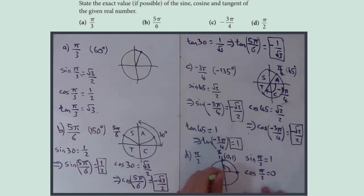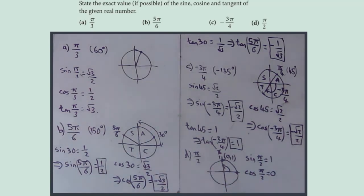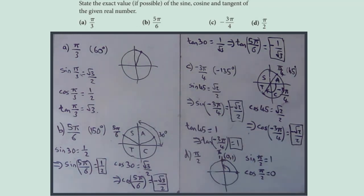Tan(π/2) is undefined. Thinking about gradients, π/2 is a vertical line and vertical lines have undefined gradient. Also, since tan(θ) = sin(θ)/cos(θ), whenever cos(θ) = 0 then tan(θ) is undefined. So tan(π/2) is undefined.